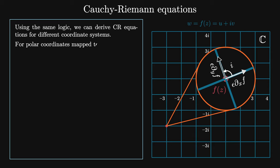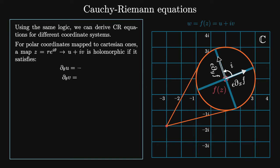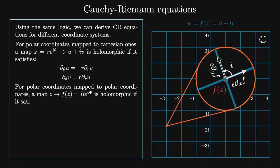We can also derive Cauchy-Riemann equations for different coordinate systems. For polar coordinates mapped to Cartesian ones, z = re^{iθ} → u + iv is holomorphic if it satisfies ∂_θ u = −r·∂_r v and ∂_θ v = r·∂_r u. For polar coordinates mapped to polar coordinates, z → f(z) = ρ·e^{iφ} is holomorphic if it satisfies ∂_θ ρ = −r·ρ·∂_r φ and r·∂_θ φ = ρ·∂_r ρ.